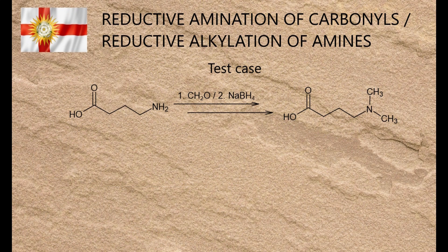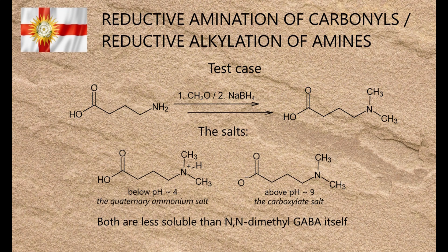I tested it out by using formaldehyde to methylate the amine group on gamma-aminobutyric acid, GABA for short — that's GABA with one B by the way, nothing to do with the early 90s rave music. Since the methylated product is a lot less soluble than the starting material, it provides a good indication of whether or not the reaction has actually worked. Generally speaking, the quaternary ammonium and carboxylate salts of N-methylated amino acids, respectively formed below pH 4 and above pH 9, are much less soluble than the acid itself, which is also a good way to identify them.